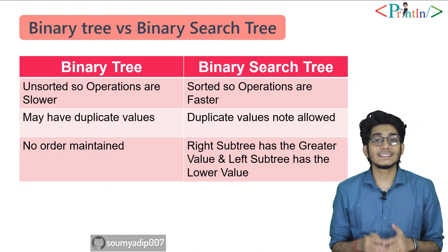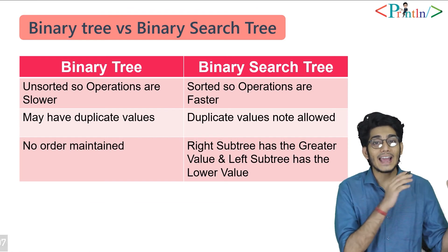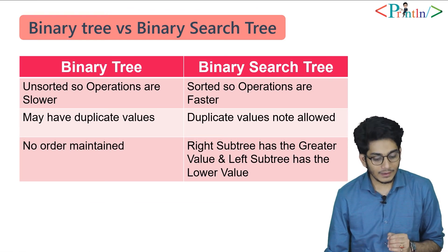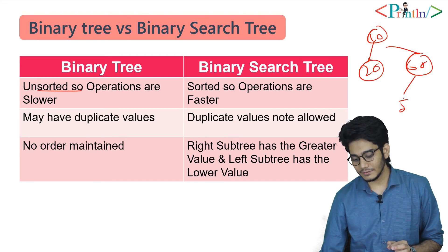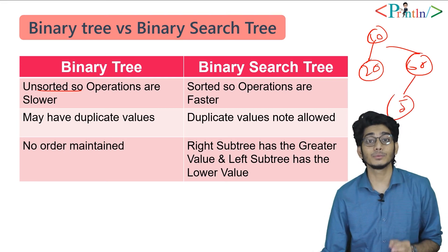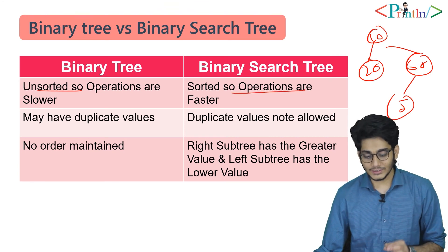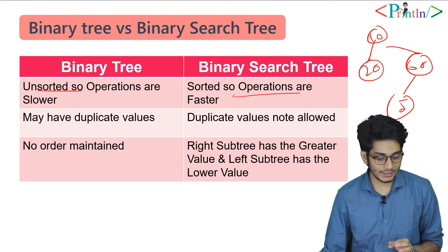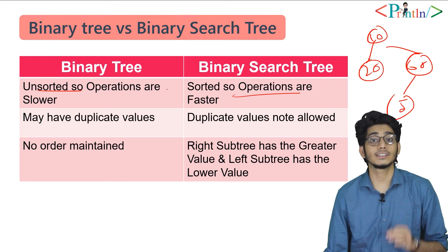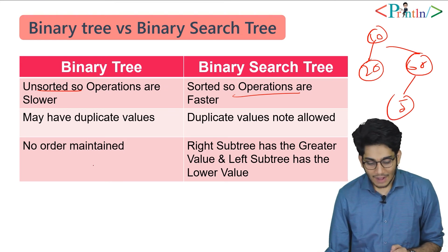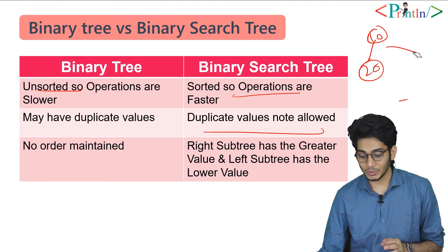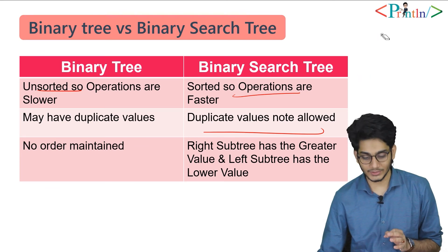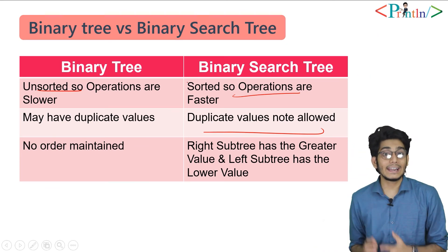Now let's see the difference between binary tree and binary search tree. In a binary tree we can have unsorted values — for example, 10, 20, 60, 5, anything. But in a binary search tree the values must be in sorted order, which is why operations are faster. A binary tree may have duplicate values, whereas in a BST duplicate entries are not allowed.